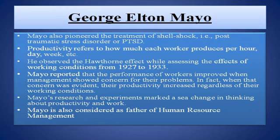Productivity refers to how much each worker produces per hour, per day, per week, etc., and his work in Hawthorne was basically for productivity. He observed the Hawthorne's effect while assessing the effects of working conditions from 1927 to 1933. Mayo reported that the performance of workers improved when management showed concern for their problems. In fact, when that concern was evident, their productivity increased regardless of their working conditions.